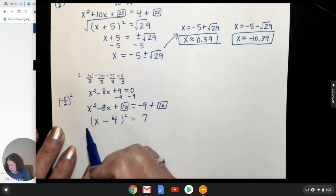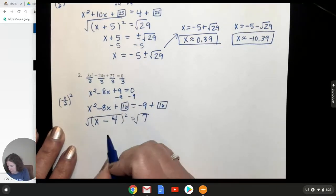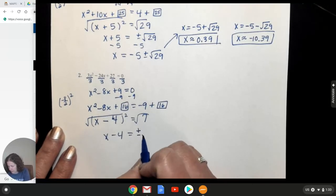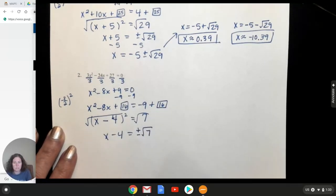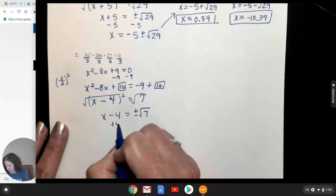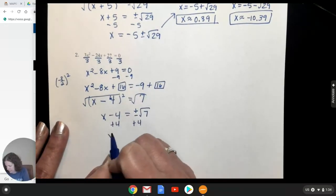Now square root both sides. So I get x minus 4 equals, and that's if I do the square root of 7, that would be a decimal. So I'm just going to leave it like that until we do it at the end. Now add 4 to both sides to get x alone.